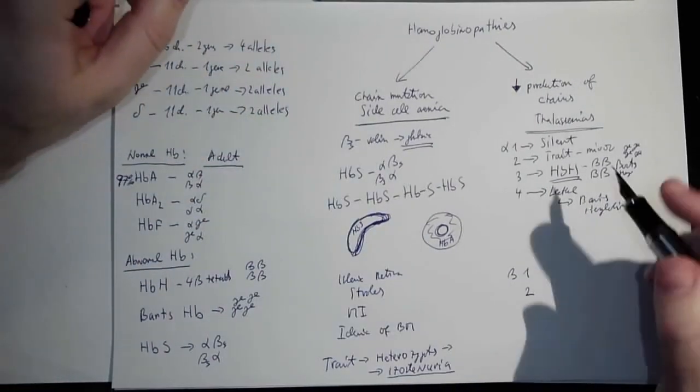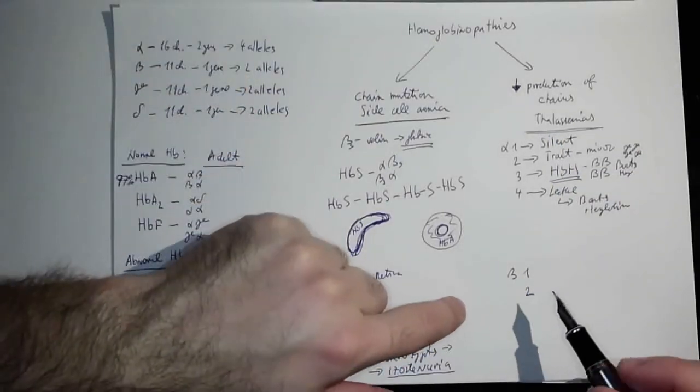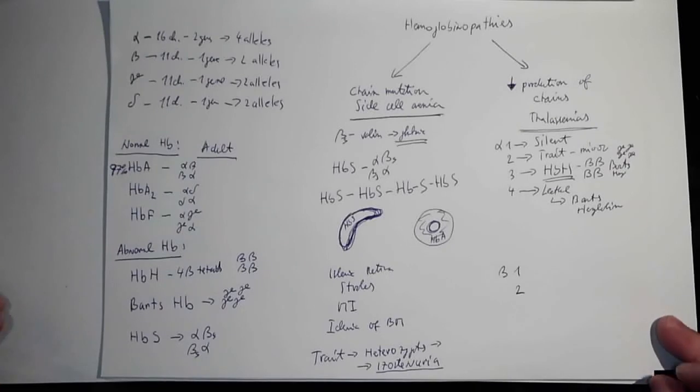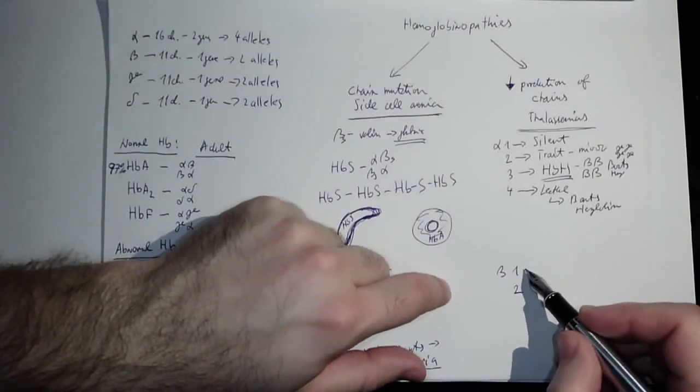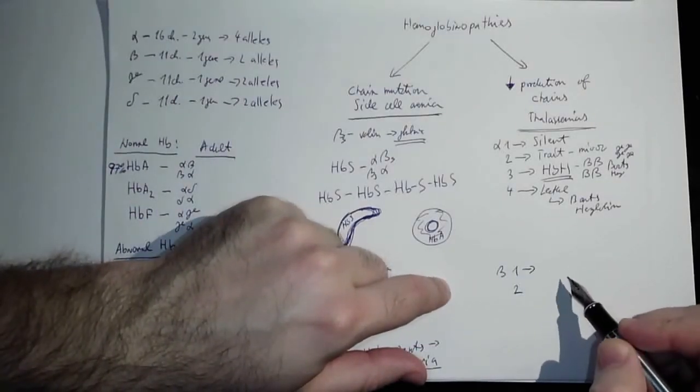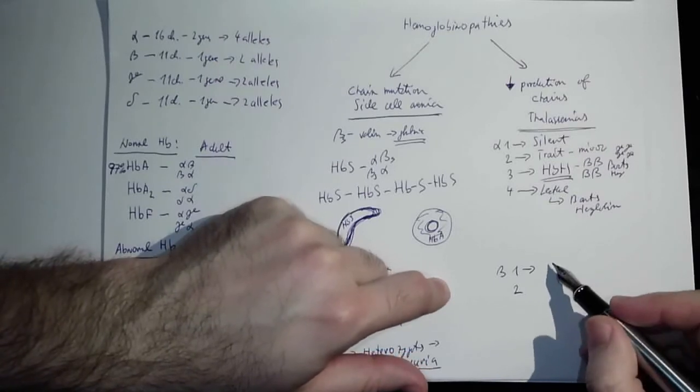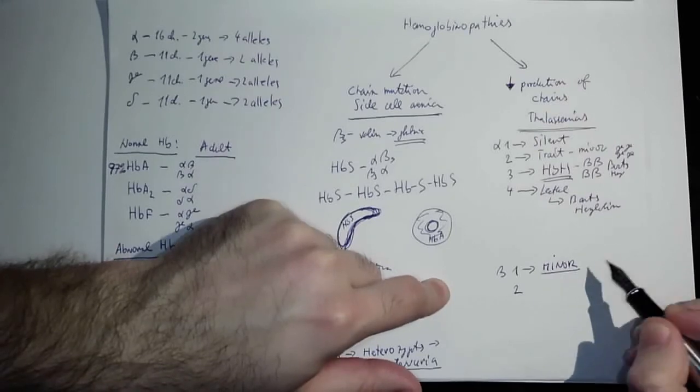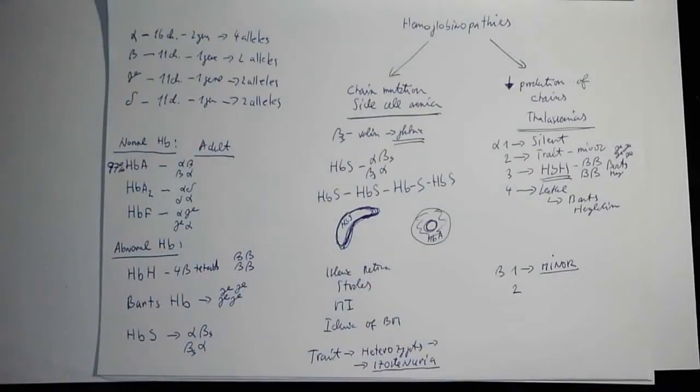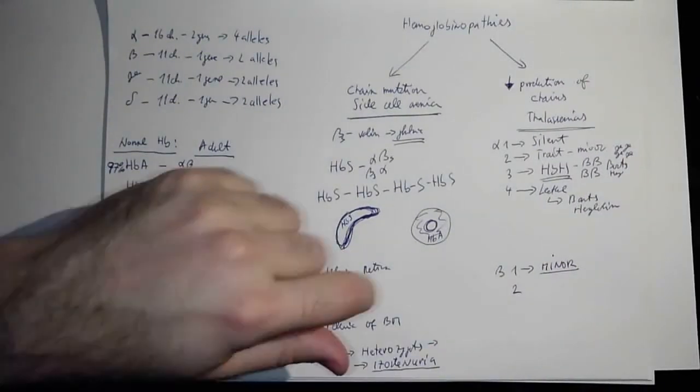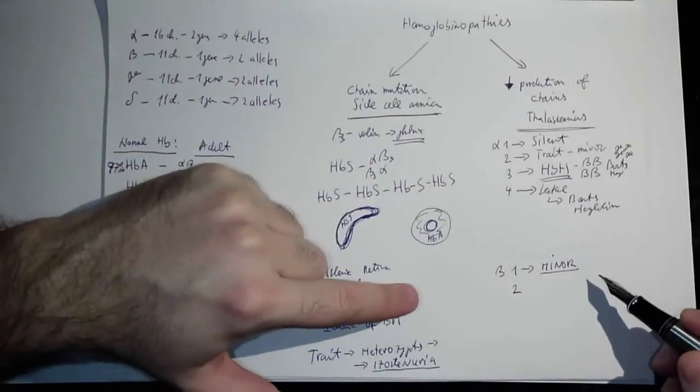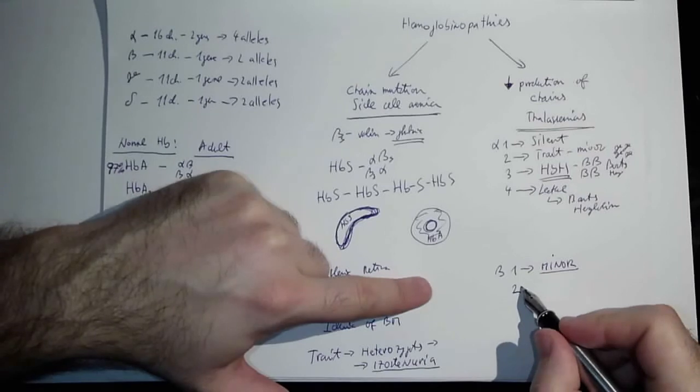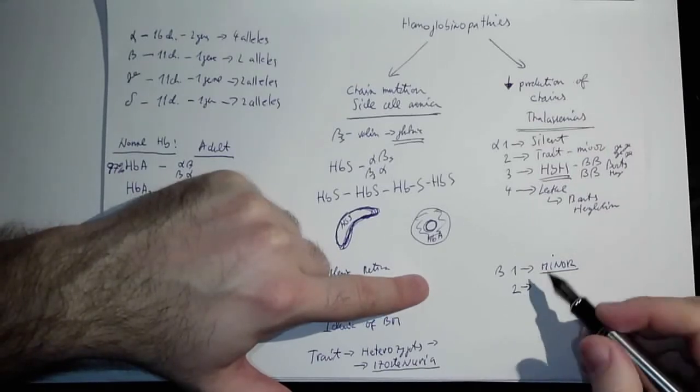That was the alpha thalassemia. Let's look at beta thalassemia. Here we've got two options: either it's heterozygous, so one allele is mutated. This is beta thalassemia minor, and it's a very weak form or pretty nice form. Some say it's also protective against malaria.